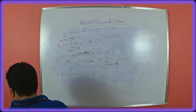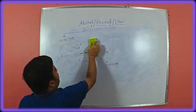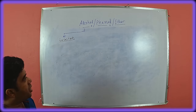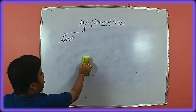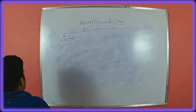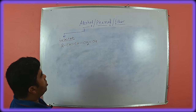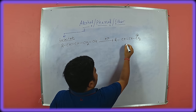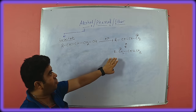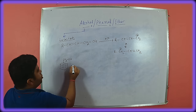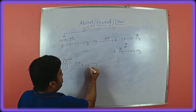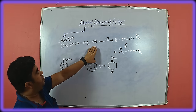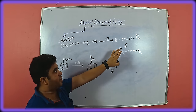The only primary alcohols that give a positive Lucas test are allylic or benzylic alcohols, because the Lucas test depends on carbocation stability. Allylic alcohol in presence of HCl gives allylic carbocation, which is highly resonance-stabilized with two resonating forms. Similarly, benzylic alcohol gives stable benzylic carbocation, highly resonance-stabilized by the aromatic ring. So these two primary alcohols give a positive Lucas test.